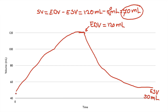So once again: the ventricle fills with blood, at a certain point the ventricle contracts, and that pushes blood out to the rest of the body. At the end of the contraction we have an end systolic volume. If the end systolic volume is 50 milliliters and the end diastolic volume is 120 milliliters, the stroke volume will be 120 minus 50, which equals 70 milliliters.